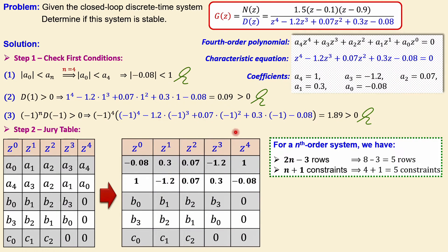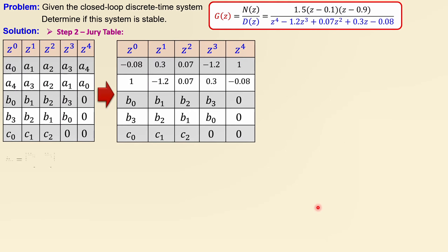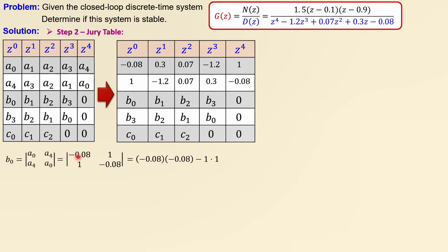We substitute the known coefficient values into the table: the first row is minus 0.08 up to 1, and the second row is the reverse order. To determine b0, we form a two-by-two matrix using the first column of the first and last rows, specifically the entries a0, a4, a4, a0, and compute its determinant. The determinant is the product of the diagonal minus the product of the off-diagonal, giving minus 0.994.